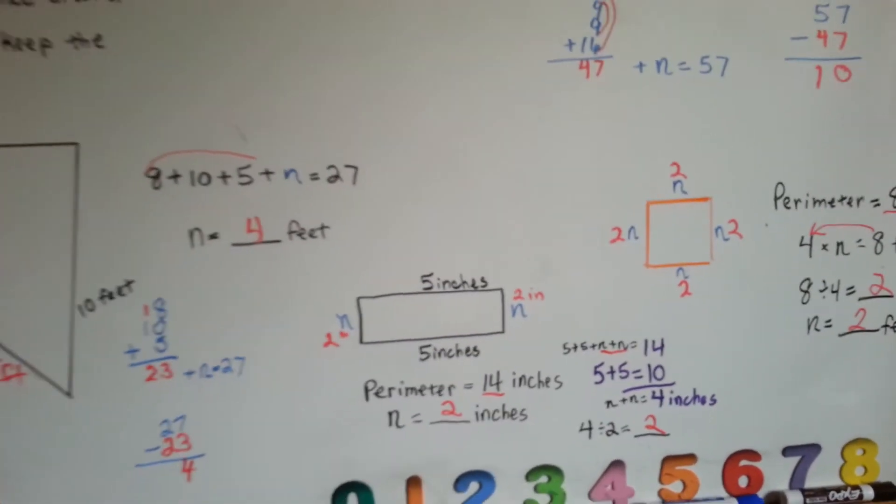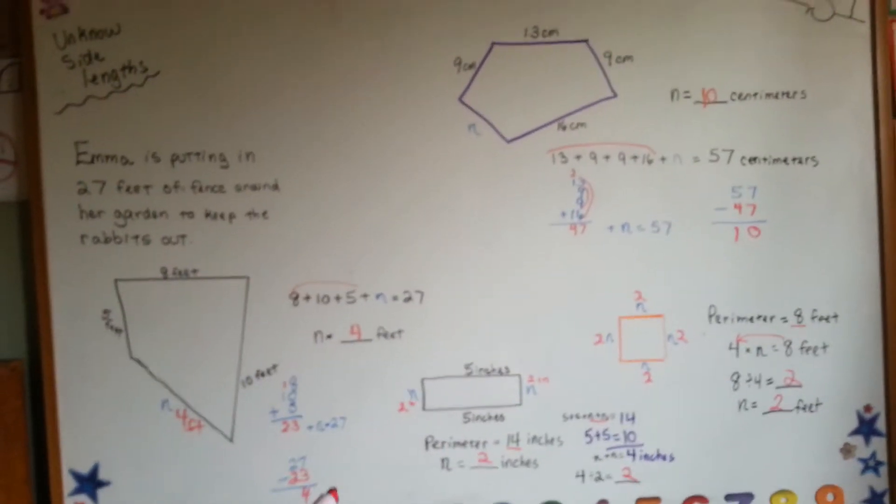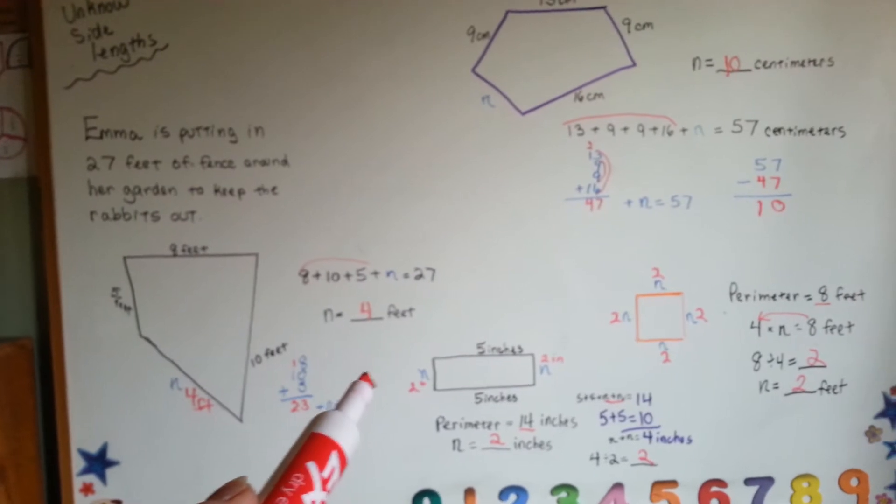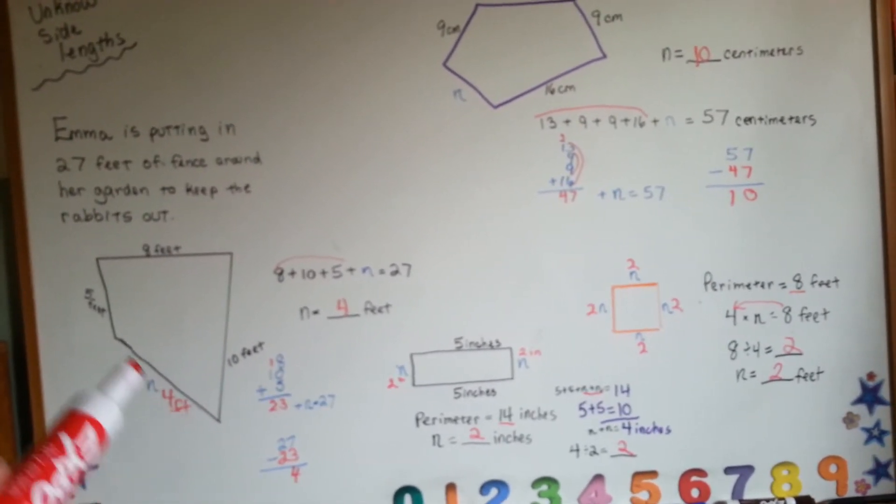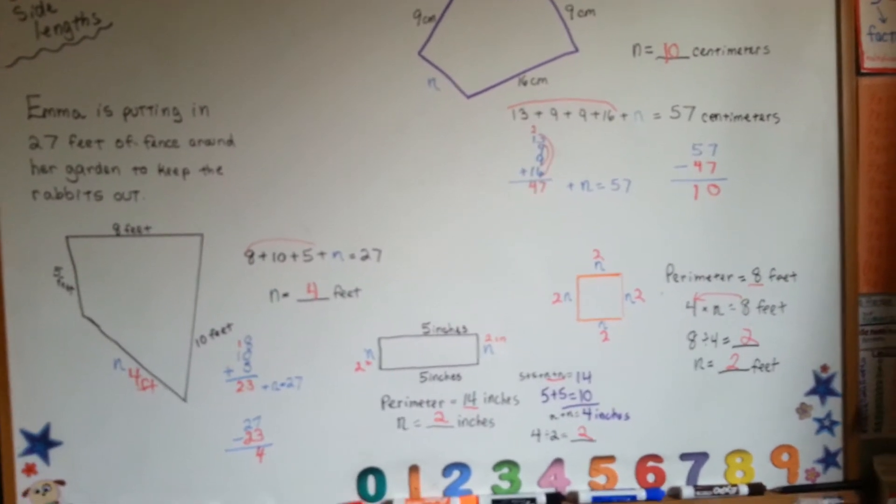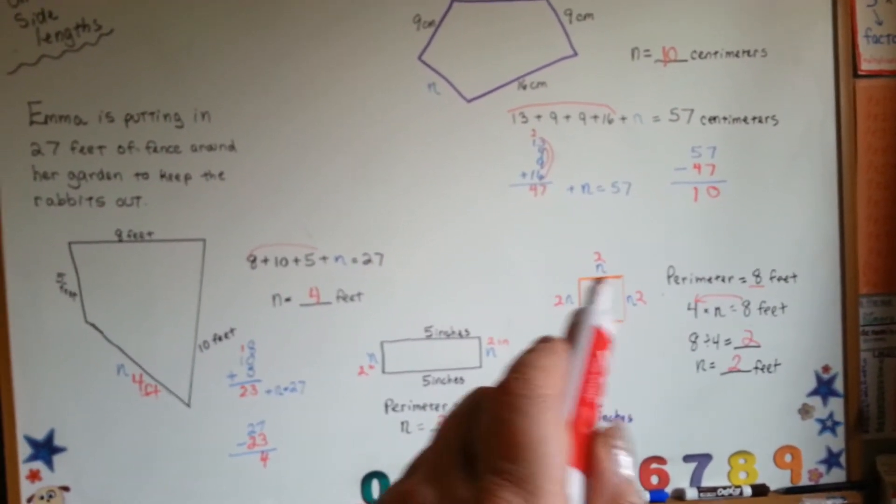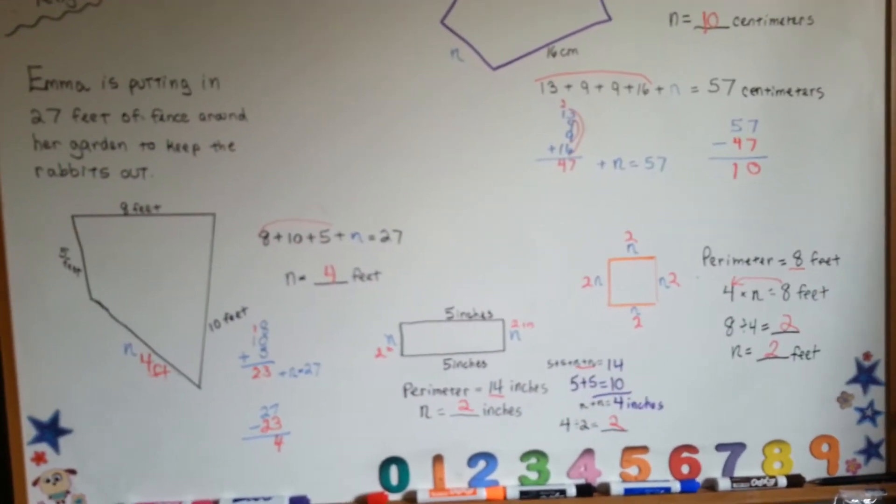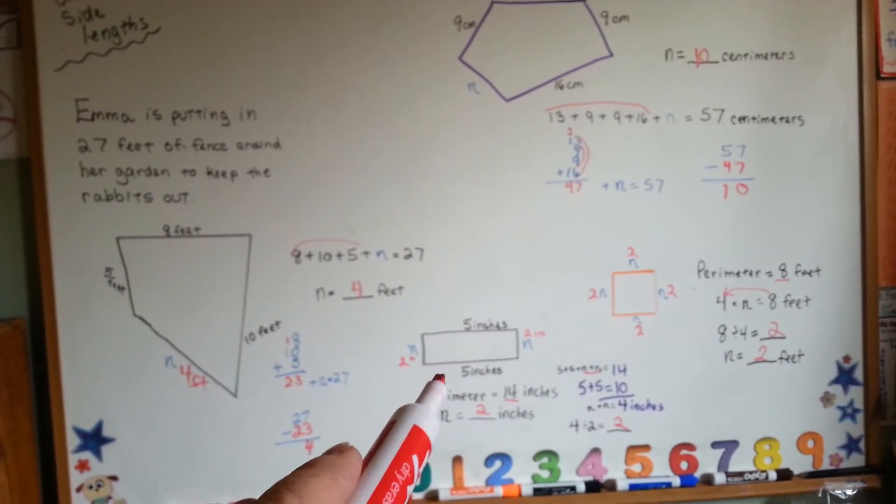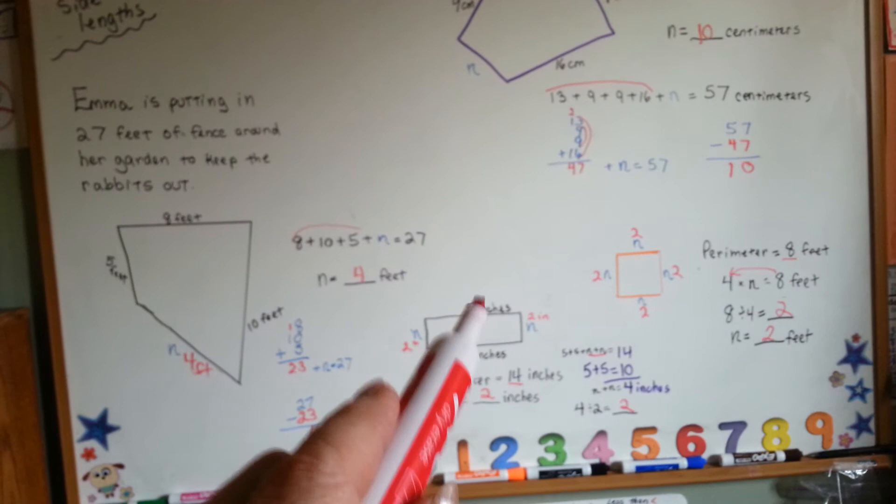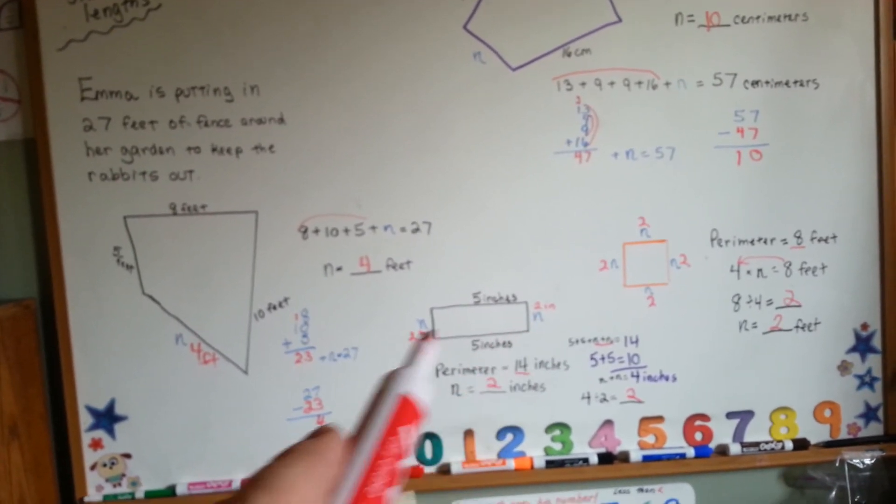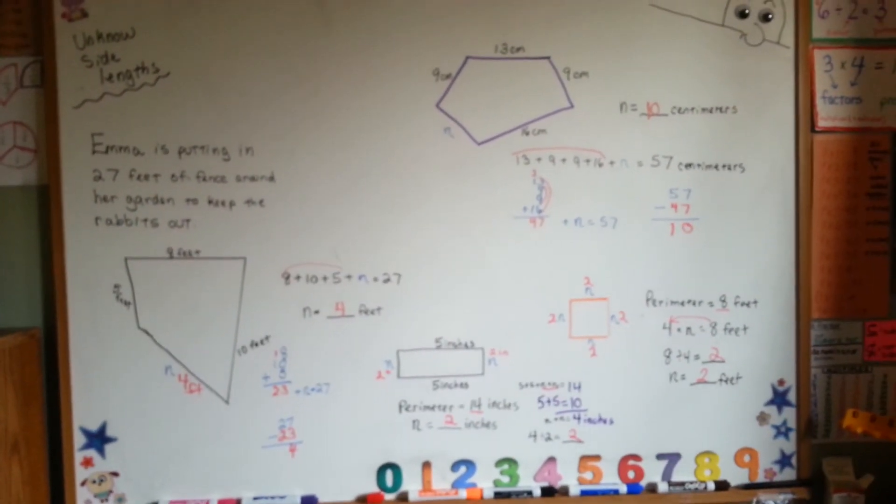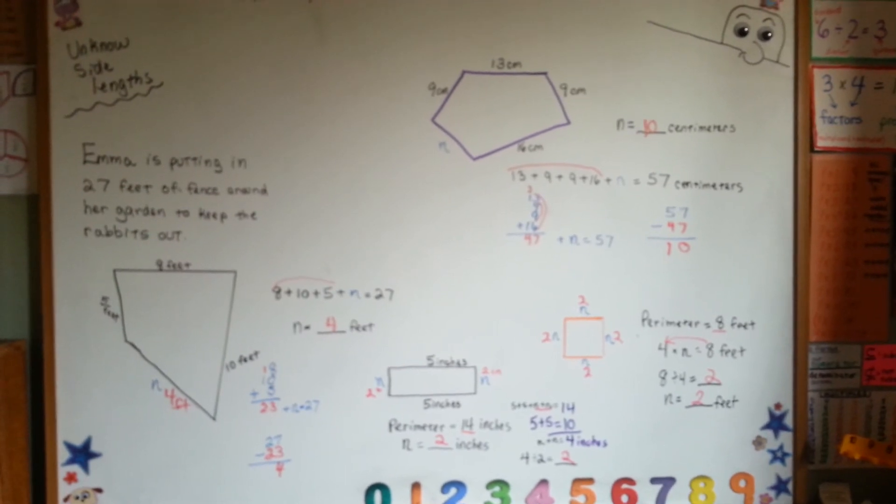So when you're trying to find an unknown side, the best thing that you can do is add up the sides that you do know, subtract that from the total, and then that number that's left over will tell you the unknown side. If you've got many unknown sides and they're all the same length, you can just divide that amount of sides into the total number of the perimeter. Like in this one, where you have two unknown sides, you would add these two, subtract it from the total, and then divide whatever's left over into the two parts. It's not that hard. I bet you could do it. I'll see you next video.